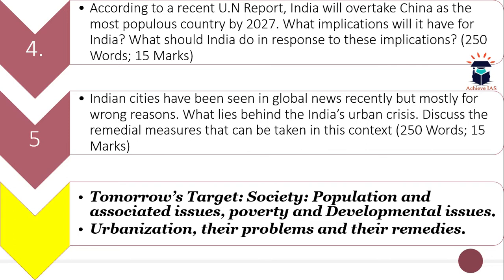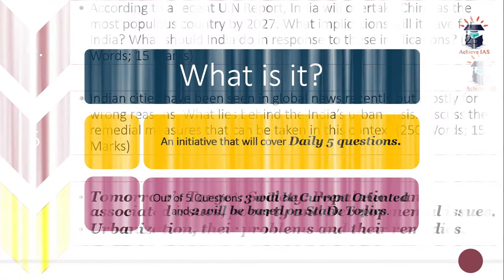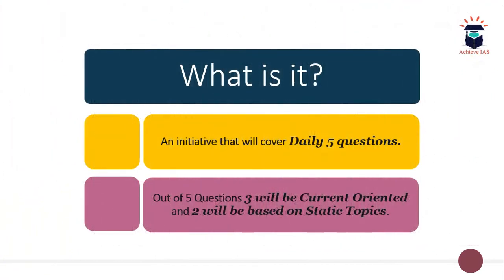These are the five questions for today. Tomorrow's target is society, population and associated issues, poverty and development issues, and urbanization — the problems and their remedies. For those students seeing this video for the first time: this initiative gives you five questions daily, out of which three come from the dynamic part and two from the static part.